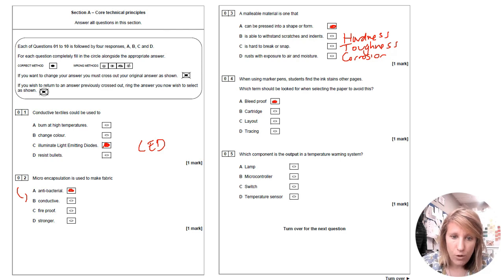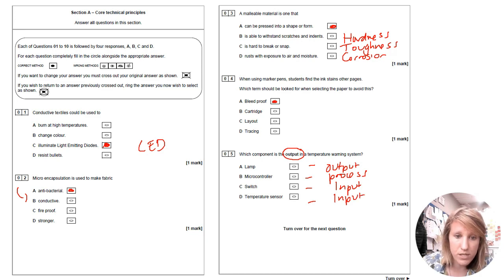Which component is the output in a temperature warning system? So a lamp is an output. Output in a temperature warning system. OK, that caught me off there. I was trying to work out, is it an output or an input? OK, so a lamp is an output. So let's see which ones these are first. Microcontroller is like the thing that's used to process it. The switch is an input and a temperature sensor is an input. So the answer must be a lamp. So a lamp or a light must come on when the temperature is getting too high in a system like in a car. When your temperature gets too high, a little light would come on.